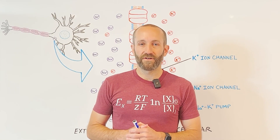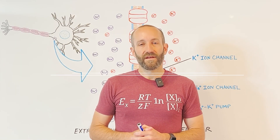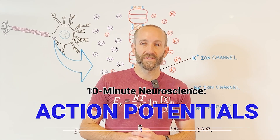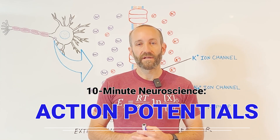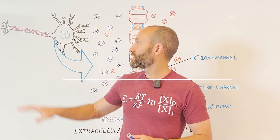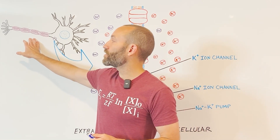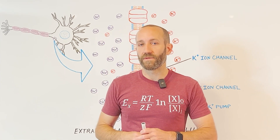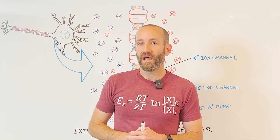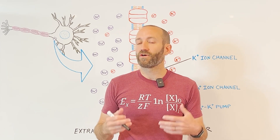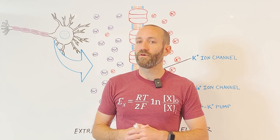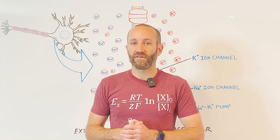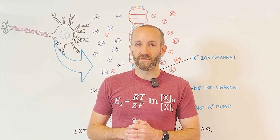Hi everyone, welcome to 10 Minute Neuroscience. In this installment I'll be talking about action potentials, the electrical impulses that travel down neurons and cause the release of neurotransmitters. Action potentials are a critical part of neural communication and essential to the function of the nervous system.